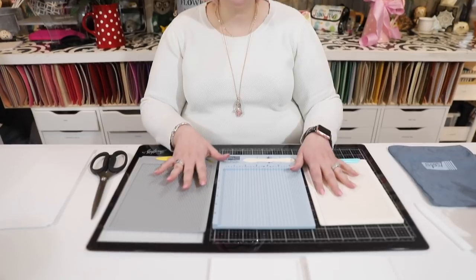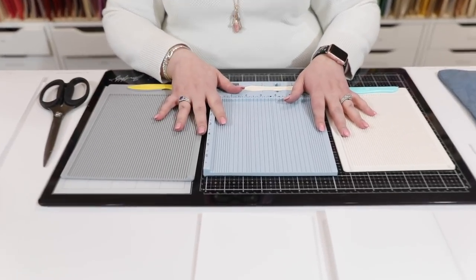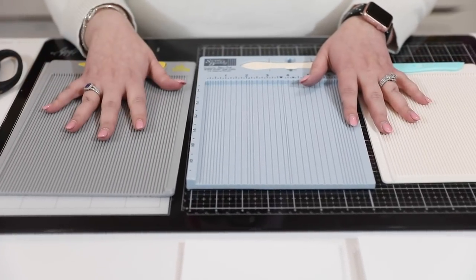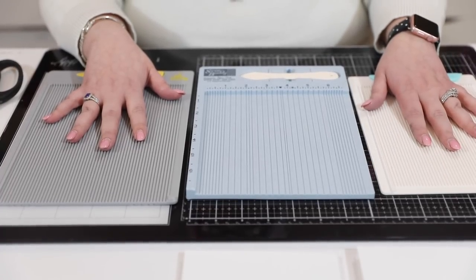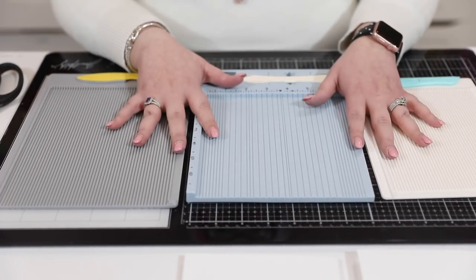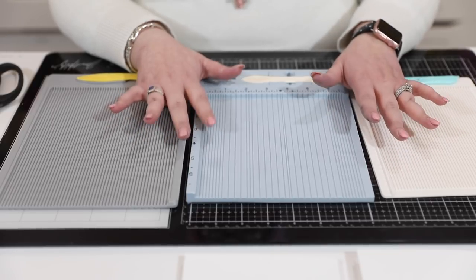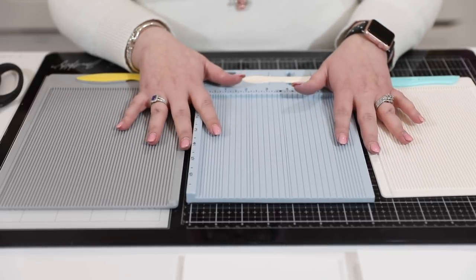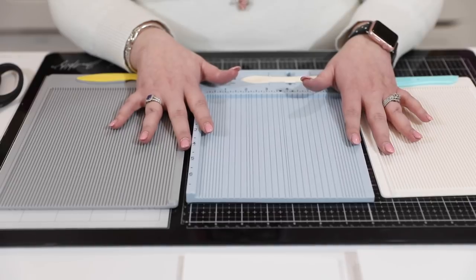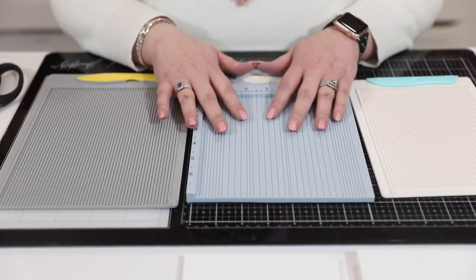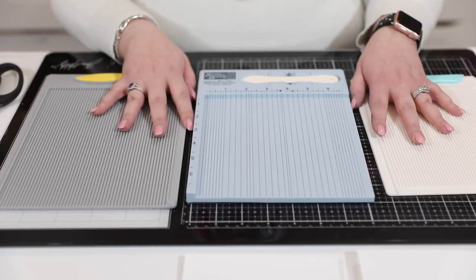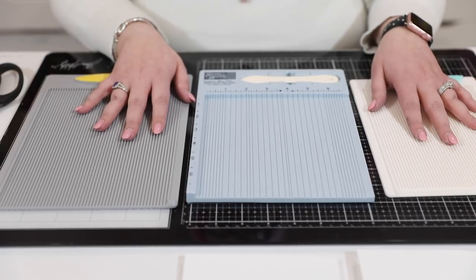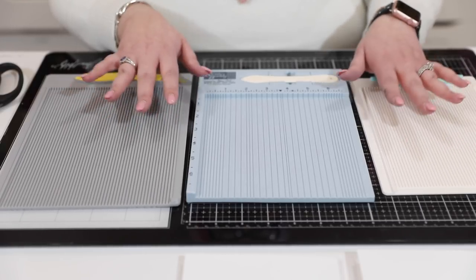Let's dive in and take a look at the three that I have here. You can see size-wise they're kind of similar. The EK Tools is the largest and the We R Memory Keepers is kind of the smallest. There are also large versions of all of these and they have similar tools, functions, etc. I should say that We R and EK are all part of the American Crafts family, so you're going to find that they are very similar as well.